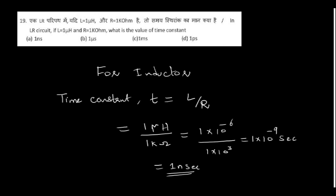In an LR circuit, if L equals one microhenry and R equals one kilo-ohm, what is the value of time constant? The equation for time constant is t equals L upon R. If you put the values and simplify, you will get one nanosecond.